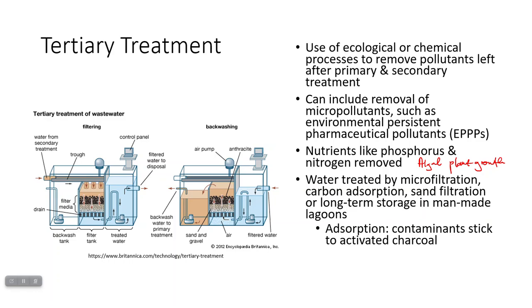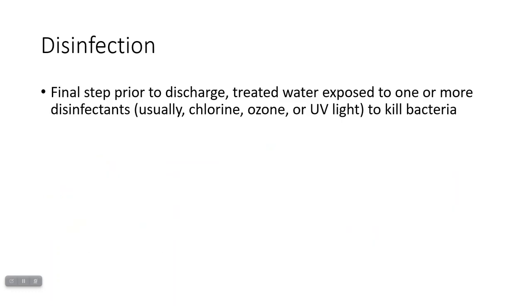Adsorption is when you use activated charcoal and run water through it — like a carbon filter. When you run water through it, the contaminants will usually stick to the activated charcoal and come out of solution. If you have tertiary treatments, this can remove up to 99% of impurities, and the water that comes out is almost drinking-water safe.